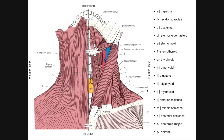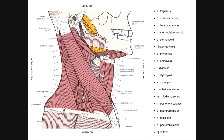Welcome back to Anatomy & Physiology on Catalyst University. In this video, we're going to review pretty much all the concepts we've talked about in this playlist. We're going to be looking at the deep muscles of the anterior neck, the intermediate layer, the hyoid layer, and we're going to put all those together and identify these on a bunch of figures.